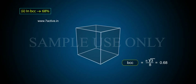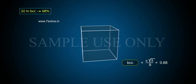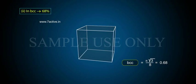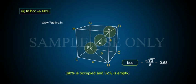In BCC, the packing efficiency is 68%. BCC = π√3 / 8 = 0.68. So 68% is occupied and 32% is empty.